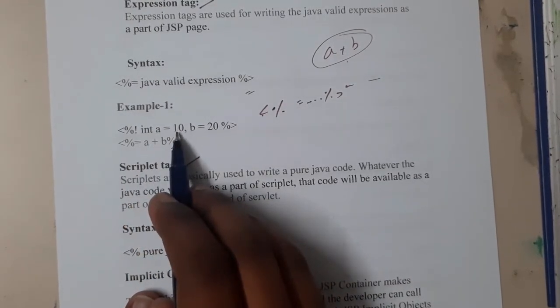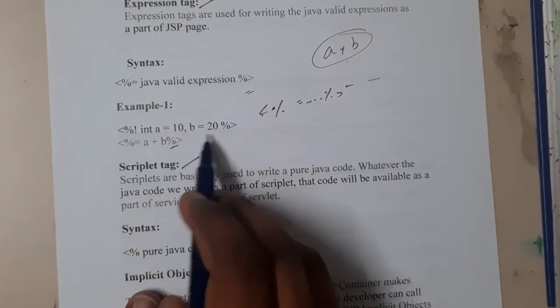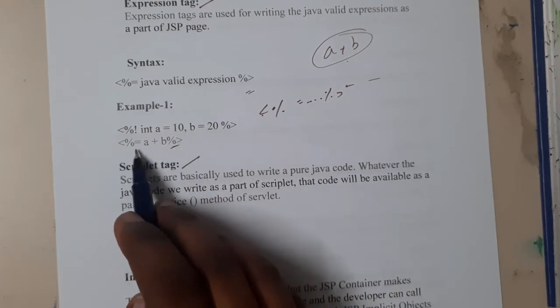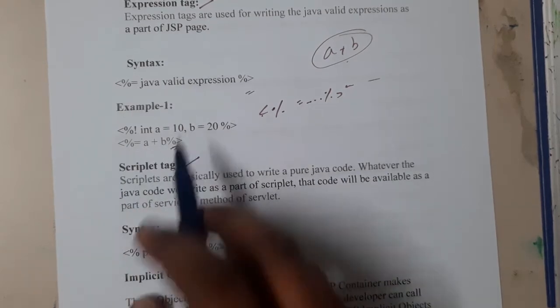Here you defined int a equal to 10 with exclamatory mark and b equal to 20. After that, you are trying to add them, so percentage equal to a plus b in this way. The operation a plus b will be done.